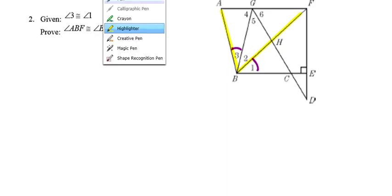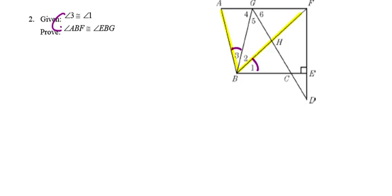What am I doing to angle 3 to get to angle ABF? I'm adding in angle 2. On the right-hand side, starting with angle 1 and wanting to reach angle EBG — what am I doing to angle 1 to increase its size to the blue angle? I'm adding in angle 2. So I know I'm going to have to add angle 2 to both sides, and I'll use the reflexive property with angle 2.